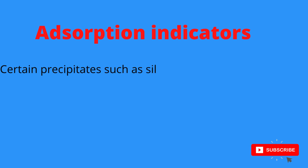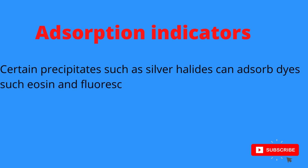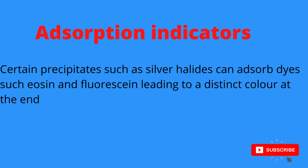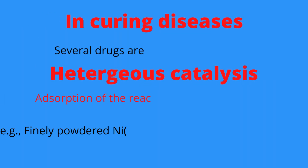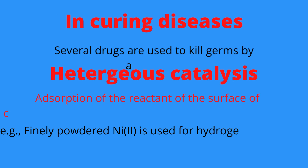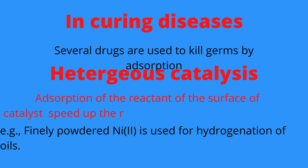Then, adsorption indicators. Certain precipitates such as silver halides can adsorb dyes such as eosine and fluorescein, leading to a distinct color at the end point. Then, in curing diseases, several drugs are used to kill germs by adsorption. Then, heterogeneous catalysis — adsorption of the reactant on the surface of a catalyst speeds up the reaction. For example, finely powdered nickel is used for hydrogenation of oils.